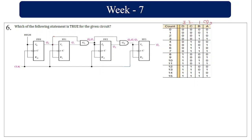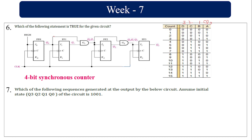For every transition, it gets toggled. Q1 and Q2 toggle whenever Q1 and Q0 both become 1 to 0 — that is why it's Q0 AND Q1. For every Q2, Q1, and Q0 being 1, it toggles. So this is a 4-bit synchronous counter.